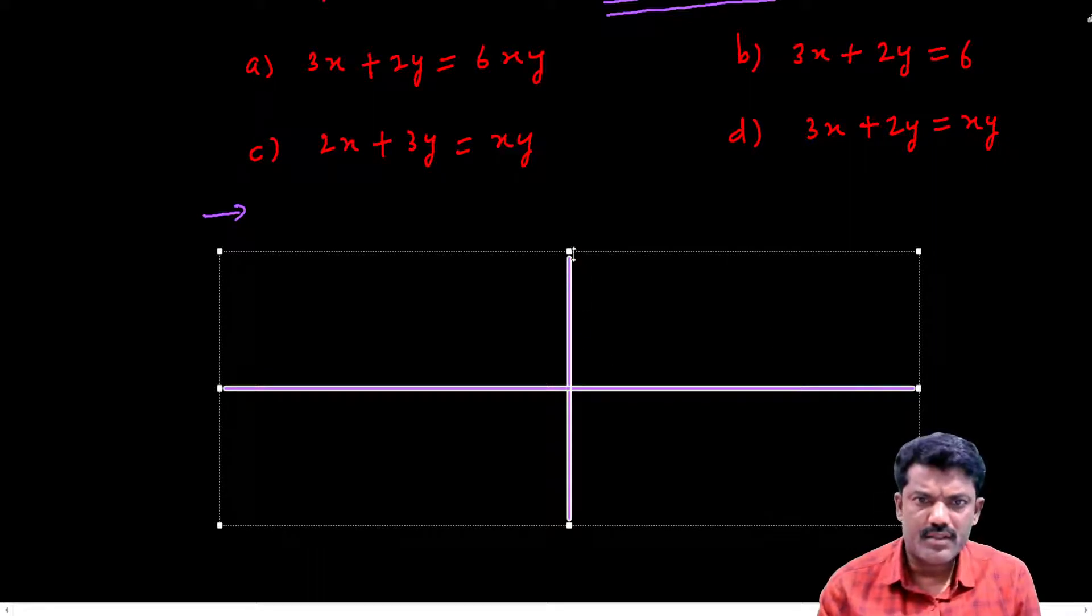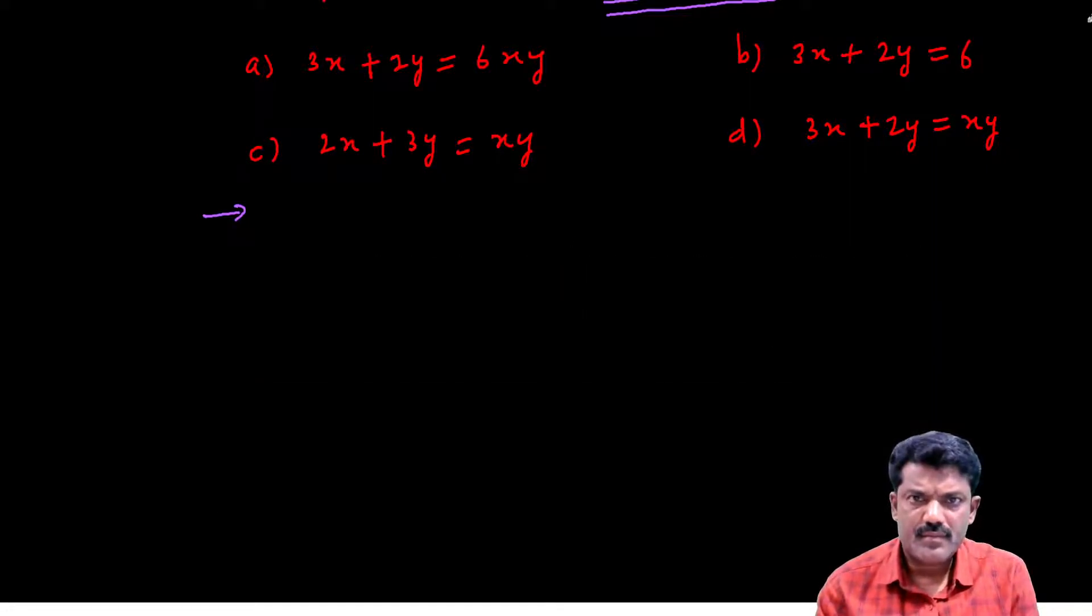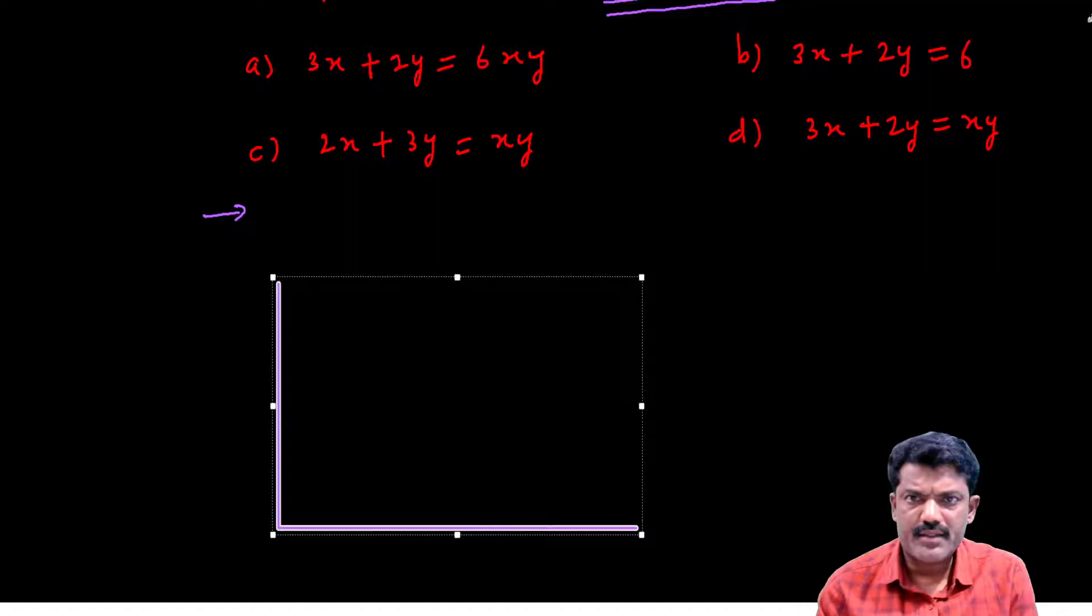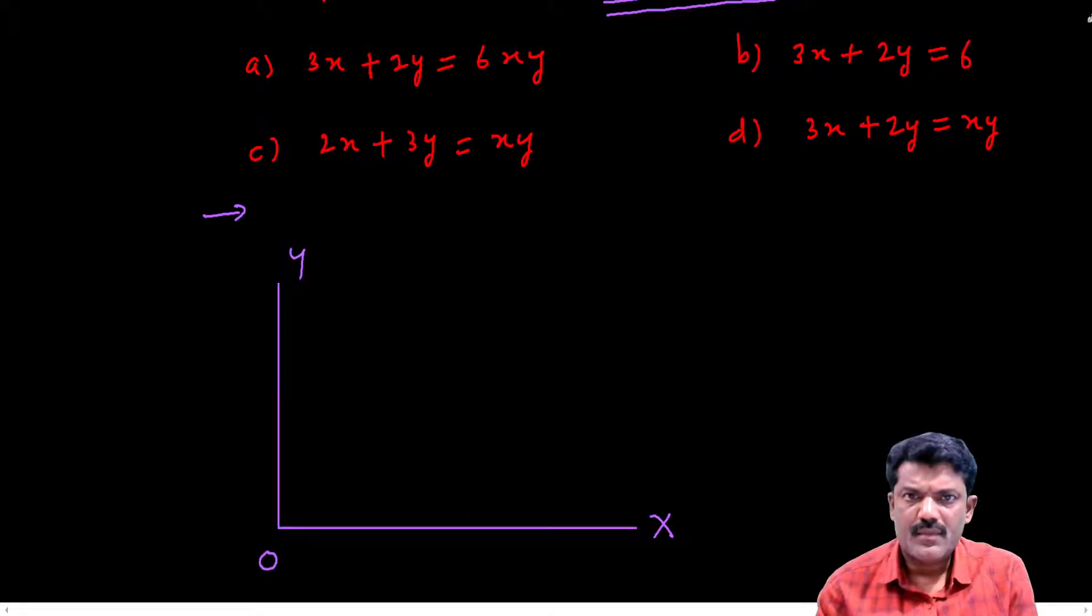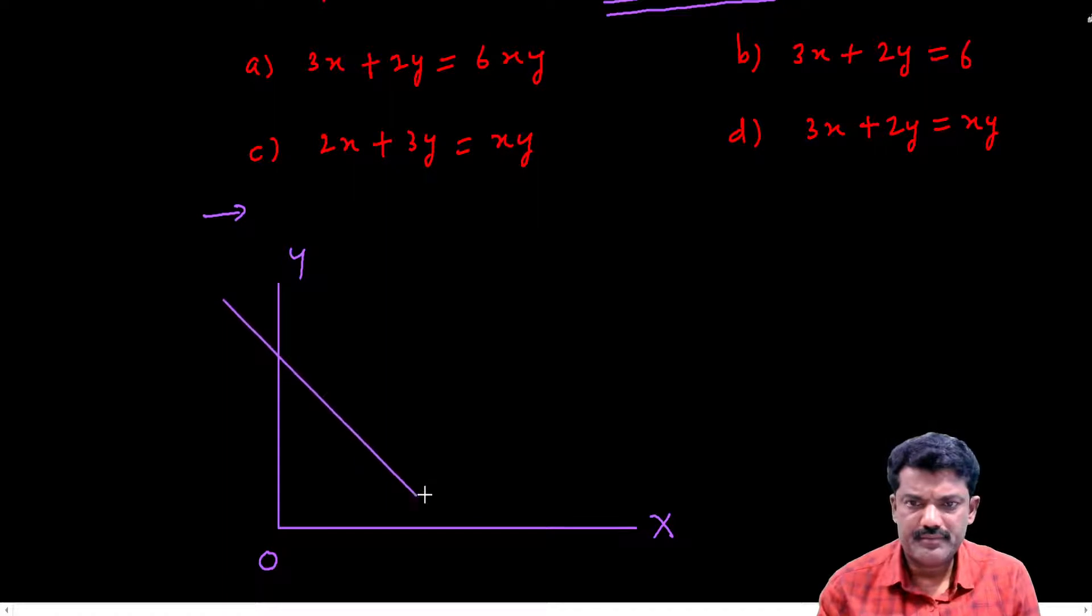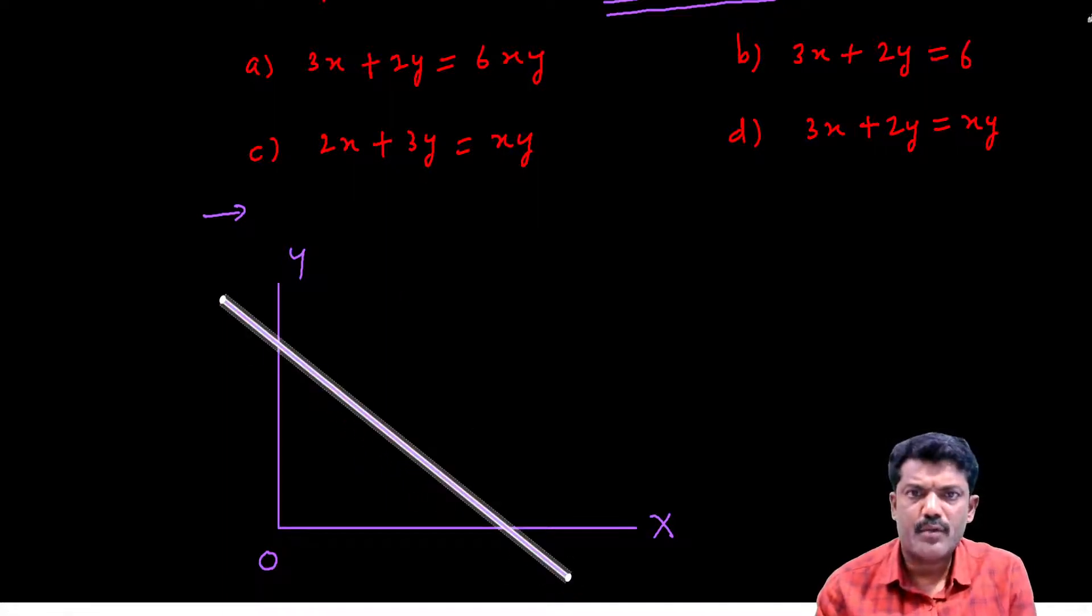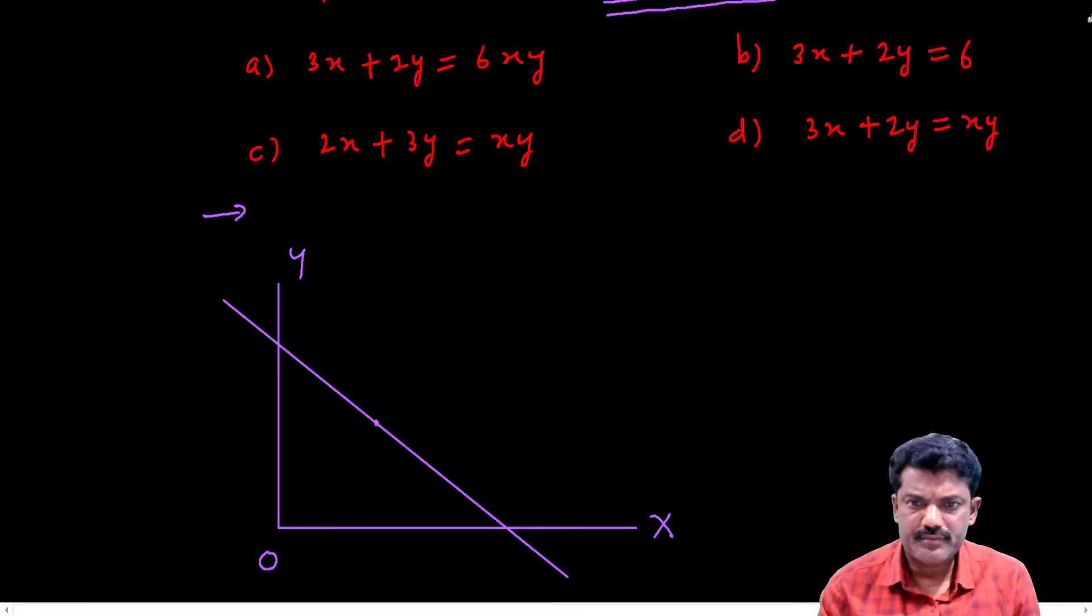I will draw this line. Here is the x-axis, y-axis, this is origin, and this is one line which is passing through the point (2,3). This line intersects the coordinate axes, that is x-axis and y-axis, at points P and Q.